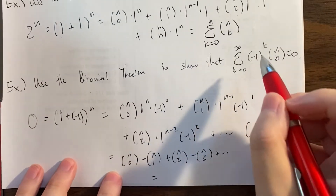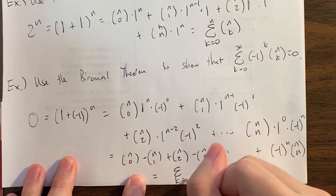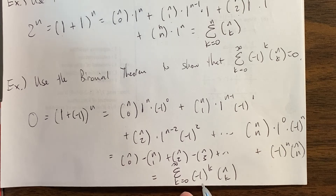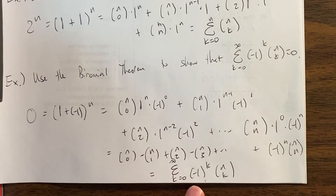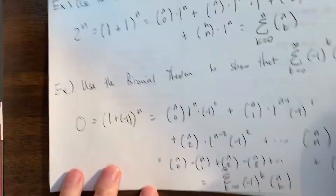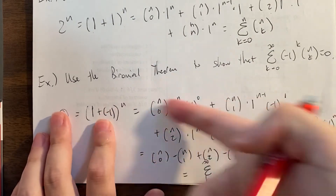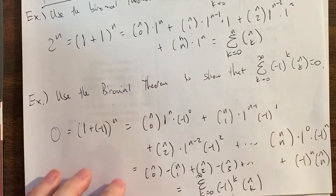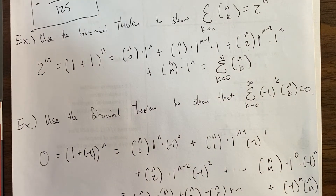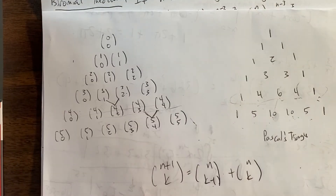When you simplify, 1 to anything is 1, and negative 1 alternates, leaving just the binomial coefficients. So we get n choose 0 minus n choose 1 plus n choose 2 minus n choose 3, and so on, with the sign of the last term depending on whether n is even or odd. In summation notation this is exactly the alternating sum formula. The left side was 0, so the alternating sum of any row of Pascal's triangle equals 0.